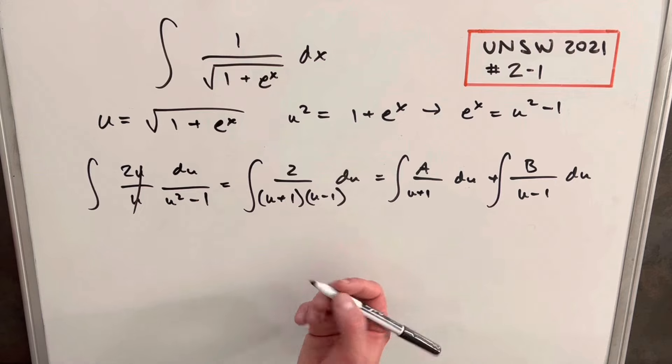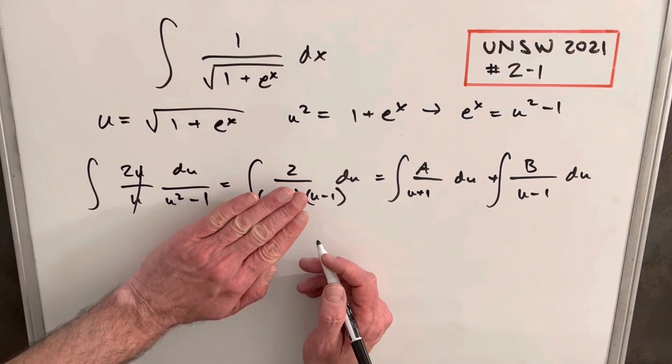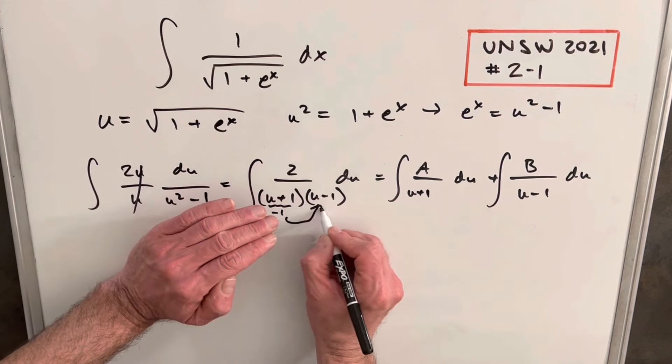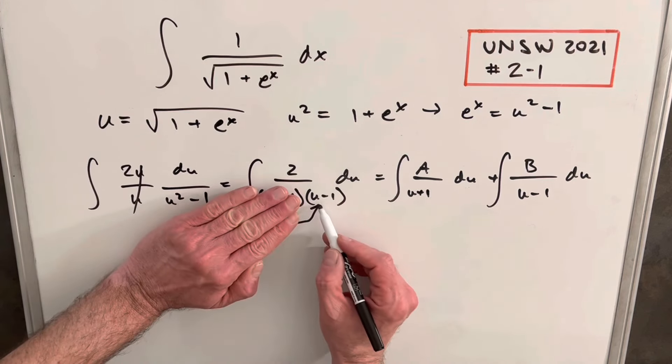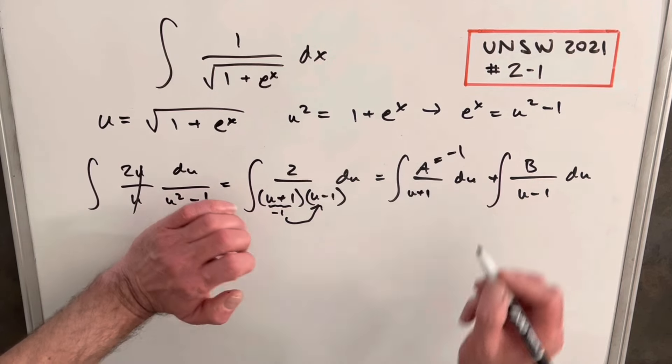Using the cover-up method, we notice that u equals negative 1 makes the (u plus 1) term zero. Plugging negative 1 into the remaining term gives us negative 2 over 2, so A equals negative 1.